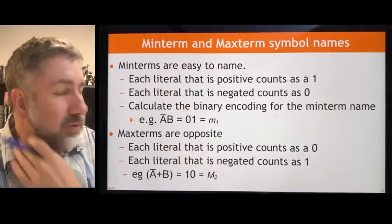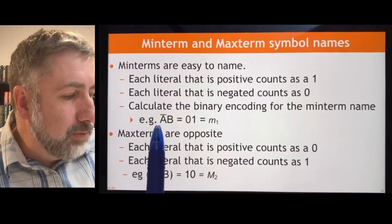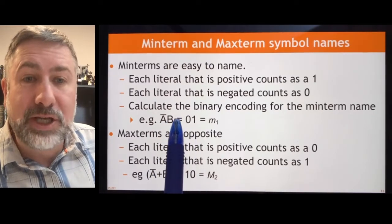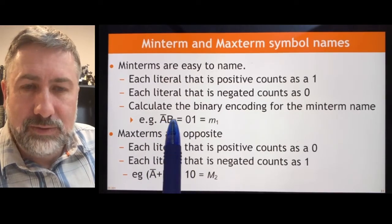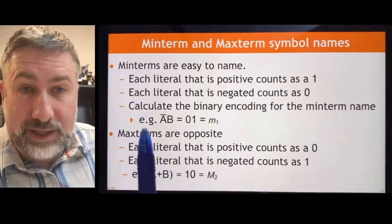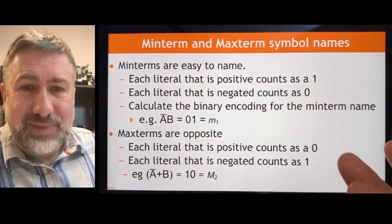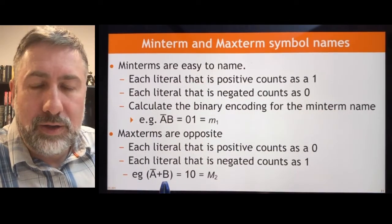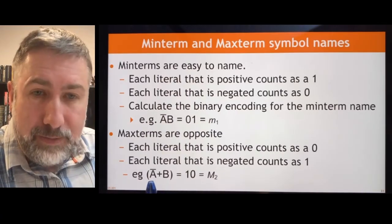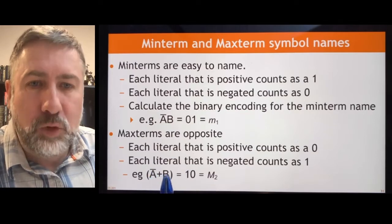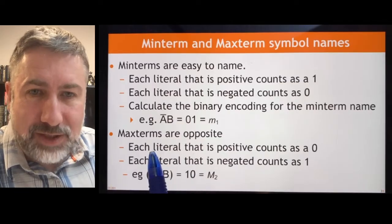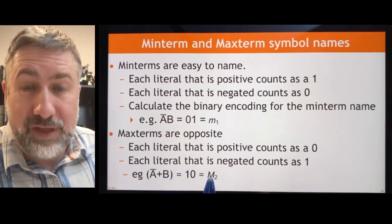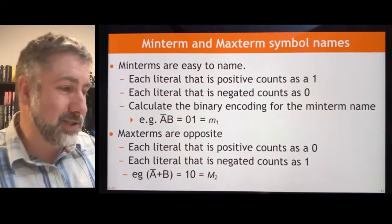Min terms are fairly straightforward to name. Look at the variables as listed: variables that are inverted count as 0, variables that are not inverted count as 1. That gives you the input combination that will make the term 1. If a is 0, then a prime is 1, a prime b is 1, and min term 1 is 1 because this is the binary encoding for 1. Max terms take a little more work: the variables that are primed count as 1 and the not-primed as 0. That binary encoding gives the name of the max term.